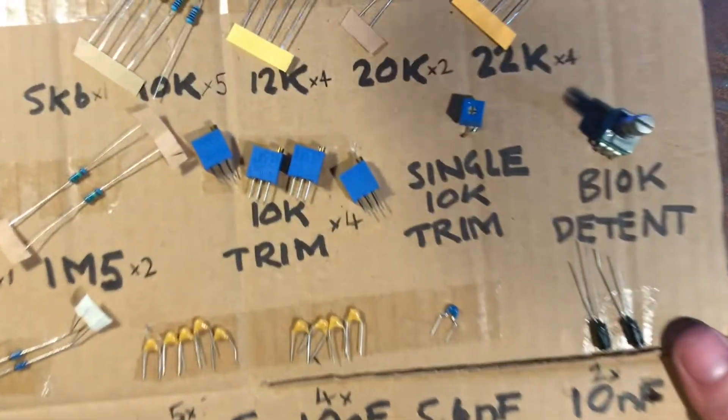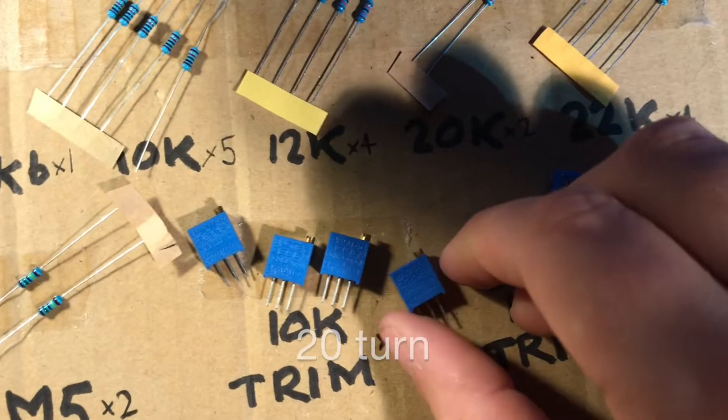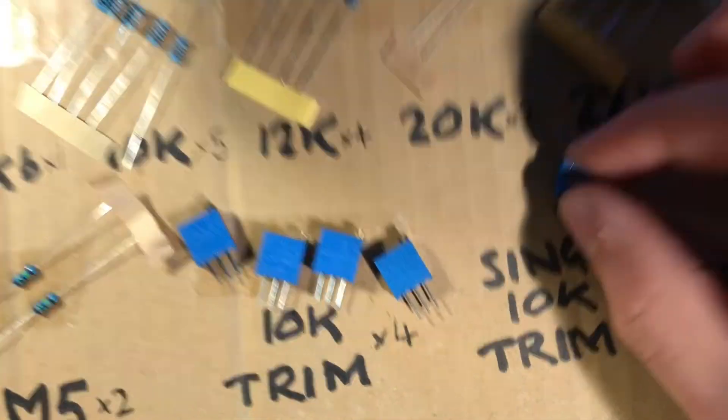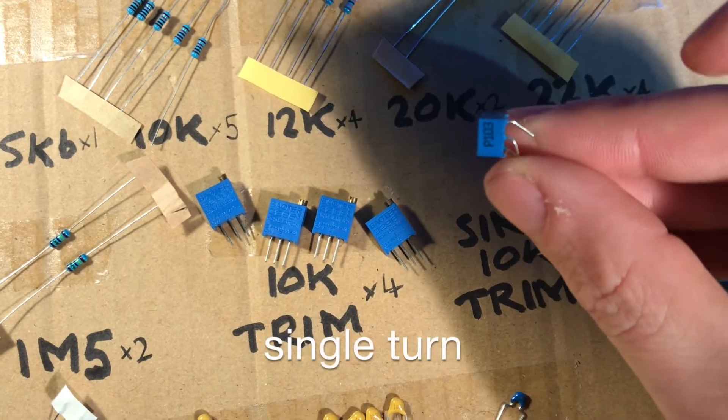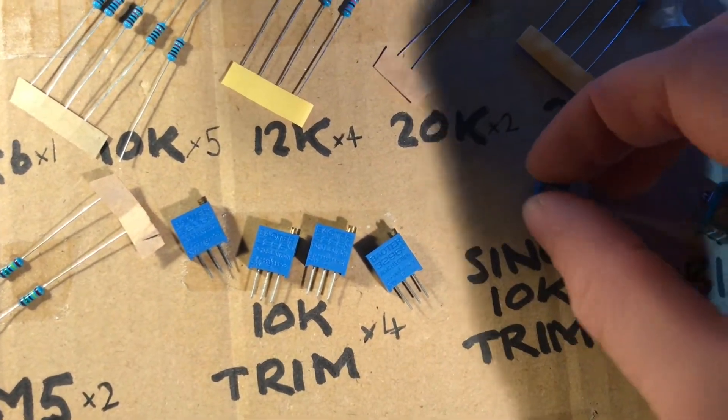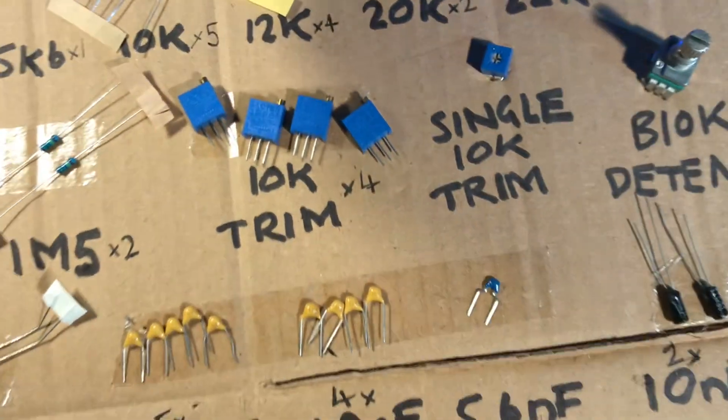Let's look at the trimmers next. We've got four of this type with a little screw on the top and one of this little type here. They're all 10K so you can't solder the wrong one in the wrong place.